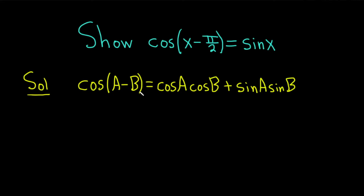So if instead you had cosine of a plus b, it would be exactly the same except you would have a minus on the right-hand side. Now let's write down the left-hand side of what we're trying to show. So we have the cosine of x minus pi over 2.